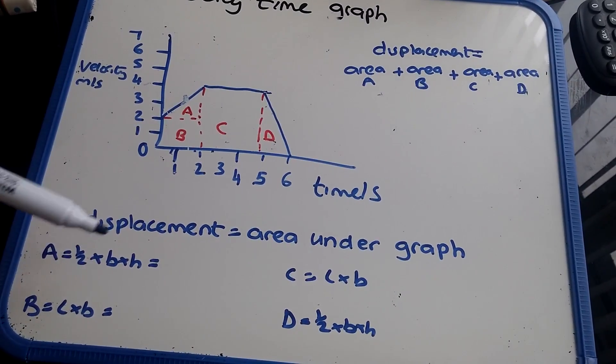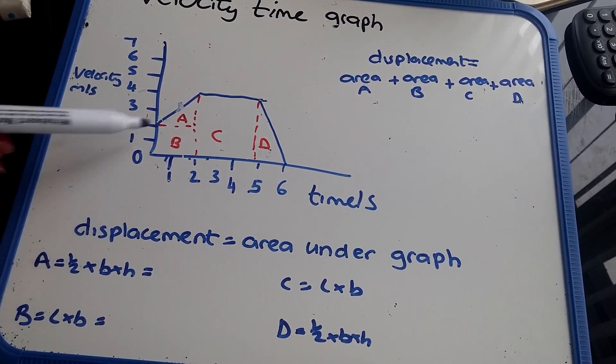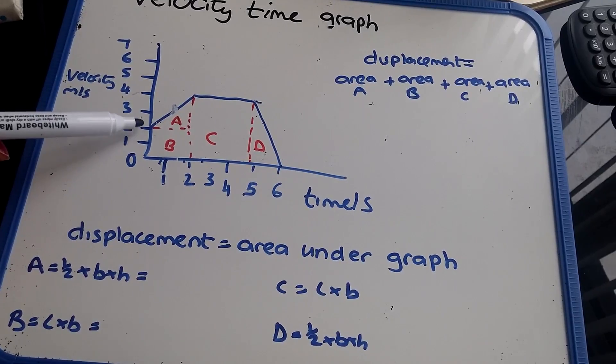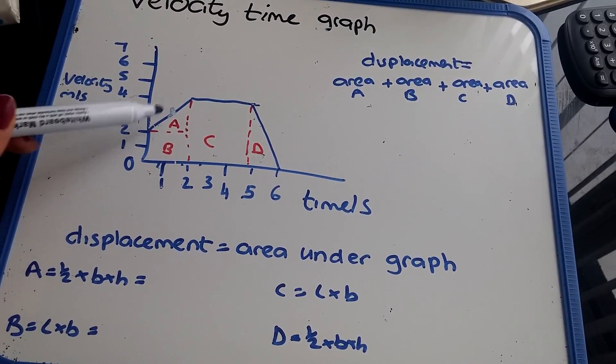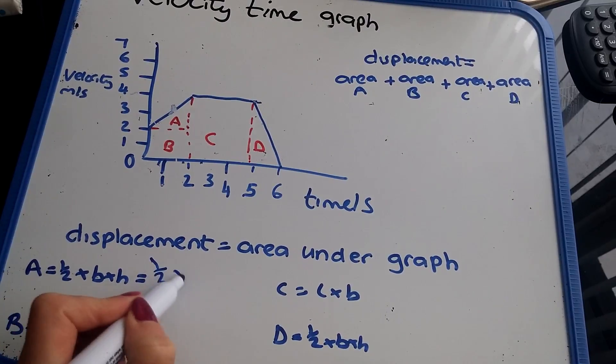So I'm just going to write down the formula for the area of a triangle. It's a half times 2 times 2, so that's 2.